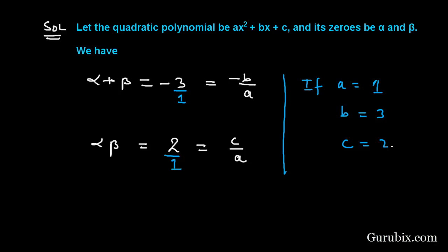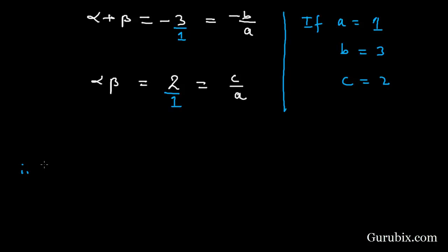We got these values from these two ratios. Therefore, the required polynomial is x² + 3x + 2. This is our solution of the example. Thank you.